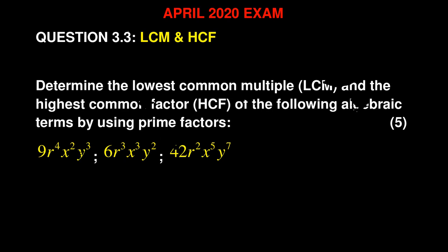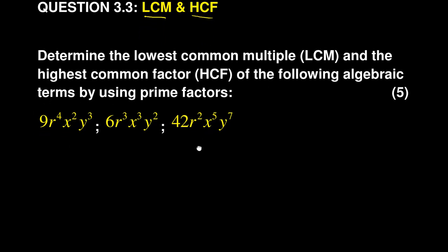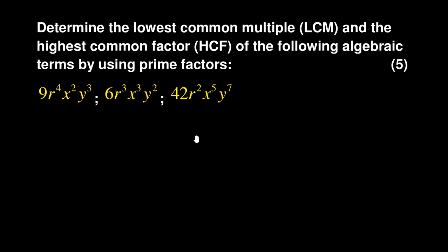Let's look at Question 3.3 from a question paper written in July 2020 — it was actually supposed to be written in April. This question focused on the Lowest Common Multiple and the Highest Common Factor. For the five marks it was worth, I think these marks were for grabs — you can get all of them without much of a problem.